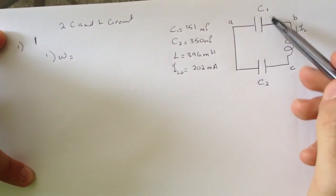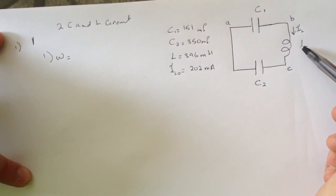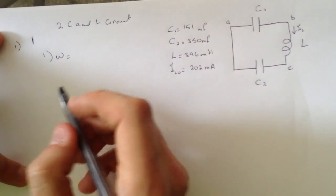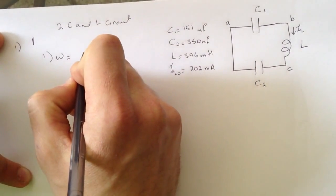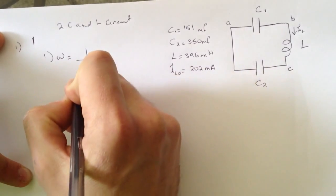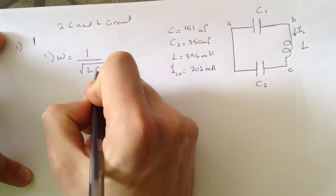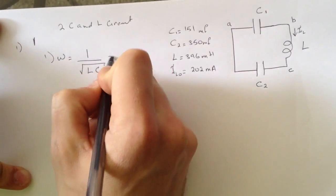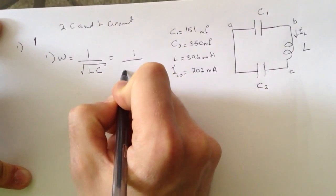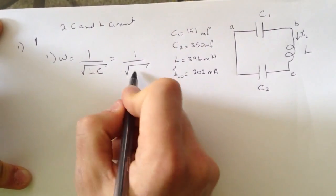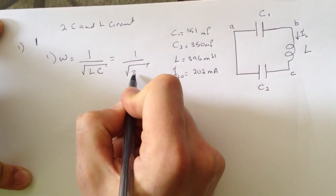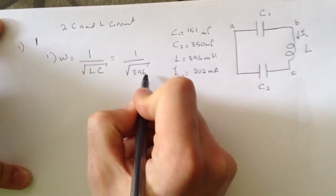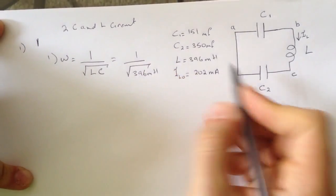It has two capacitors and one inductor in it, and this is the current going down from here. So what's the rule for this one? It's 1 over square root of LC. When you do this, it's 1 over square root of, and then the L we have is 396 millihenries.